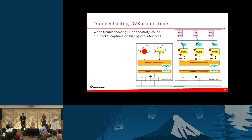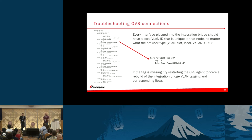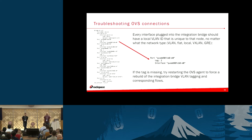You traverse tap interfaces, qbr bridges, veth pairs, the integration bridge, the physical switching infrastructure, and then back up through the network node. In an OVS environment you have what's called the integration bridge, and all your tap interfaces for instances and some network agents plug into this single bridge. When you have different networks, each network gets its own local VLAN ID specific to that node. For a particular port, a VLAN tag of 2 corresponds to some real segmentation ID for a network created by a user, and flow rules on the bridge translate that local VLAN to the physical VLAN or the overlay segmentation ID.